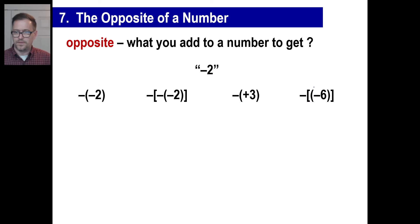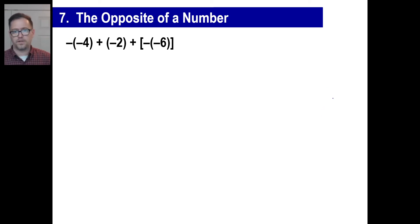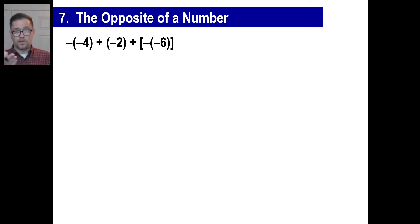Well, we know what this is. That's negative six. You can visualize it on a number line. The opposite of that would just be six, or positive six. Now we're going to get into adding clumps of numbers like this with all these different signs.